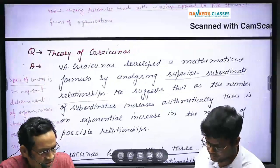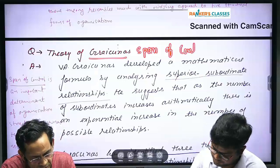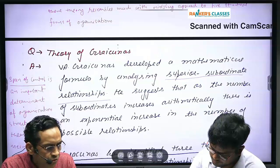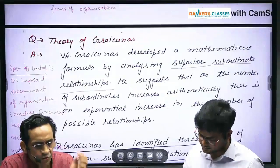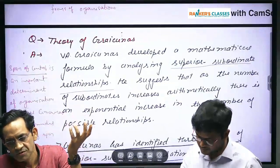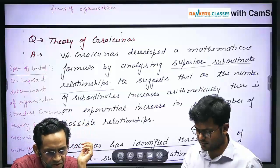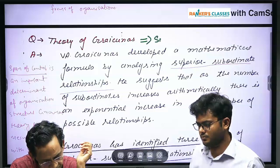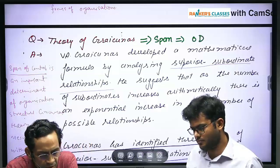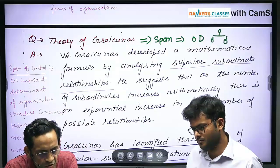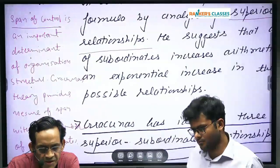Graicunas' theory is concerned with span of management — span of control. You should not answer any theory in isolation or in silos. Span of control is linked with organization design: when you develop organization structure, you have to consider span of control. It is an important determinant of organizational structure and should have been written as such.